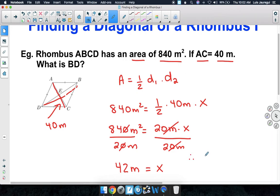Therefore, the length of the other diagonal, namely BD in this case, is equal to 42 meters. And that's how we can actually find the length of a diagonal in a rhombus. Thank you for watching, and have a wonderful day.